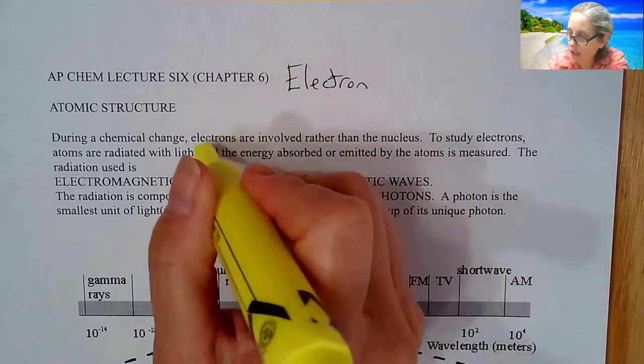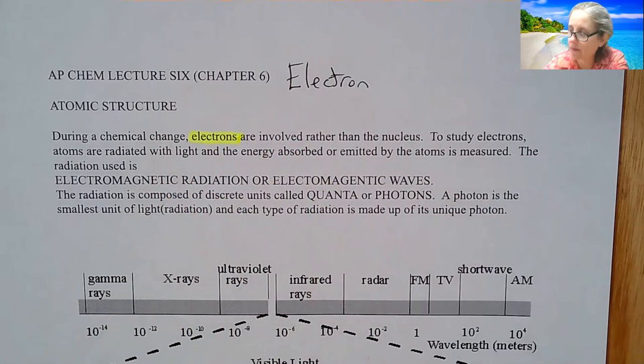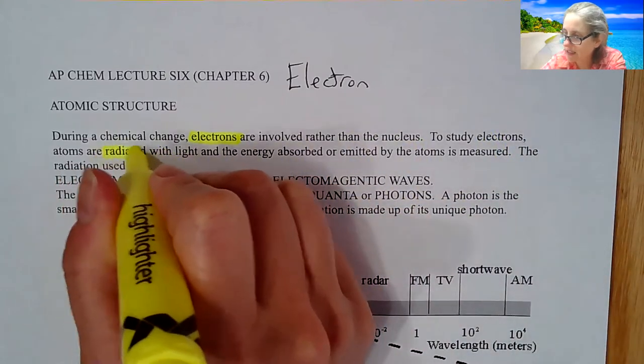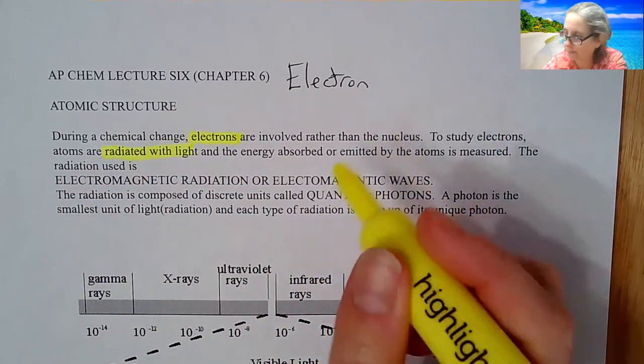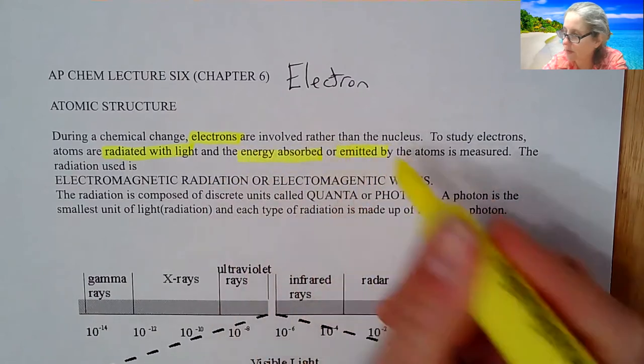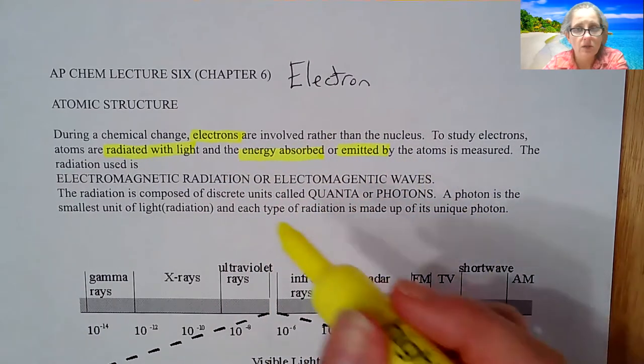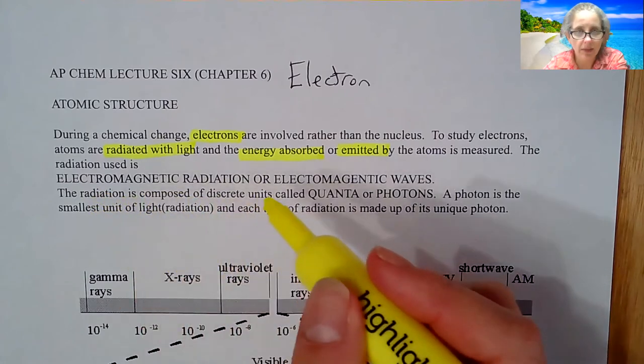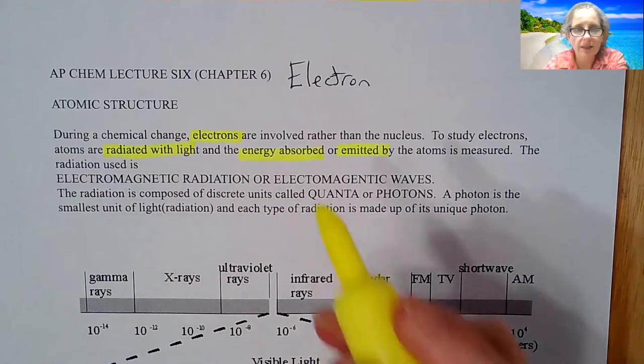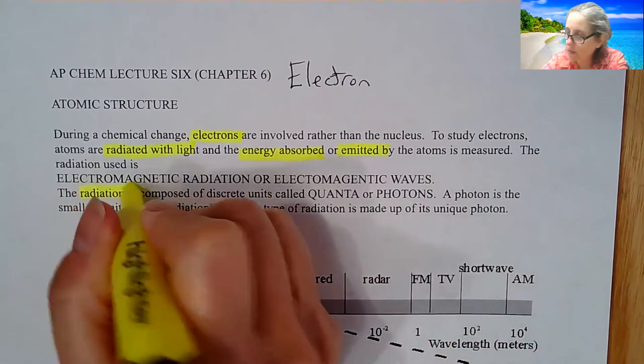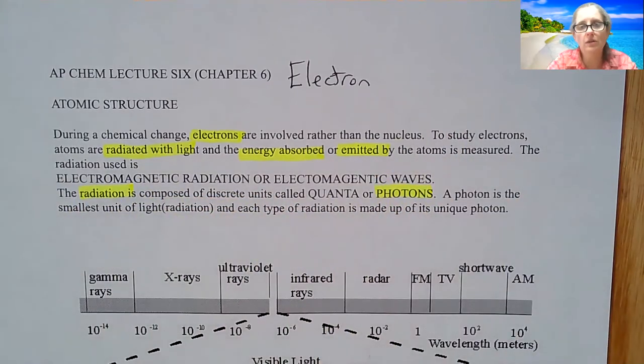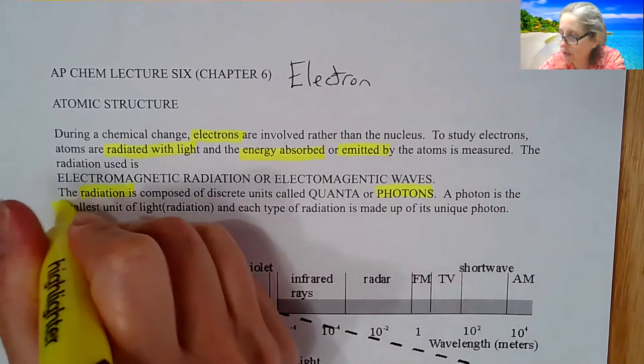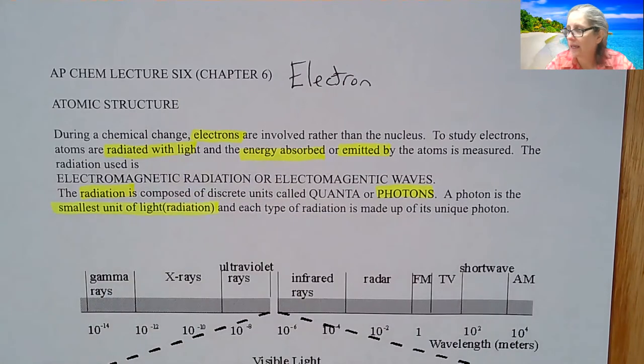During a chemical change electrons are involved rather than the nucleus. To study these electrons we need to hit the electrons with light. The energy absorbed or emitted is then going to be measured. We have electromagnetic radiation. Radiation is composed of discrete units called quanta or photons. A photon is the smallest unit of light and each radiation is made up of unique photons.